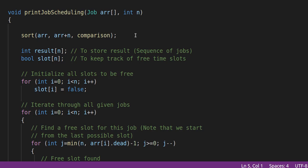We use the result array to store the sequence of jobs. The slot array keeps a track of free time slots. We initialize the slot array with false—that is, initially all the slots are free. Then this outer loop, which is i equal to 0, i less than n, i plus plus, this outer loop iterates through all the given jobs. For each job, we find the last possible free slot and make the slot occupied. Once the free slot is found, we add the job and make the slot occupied.